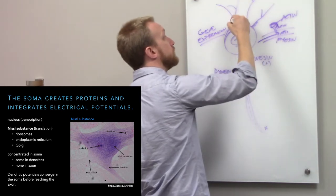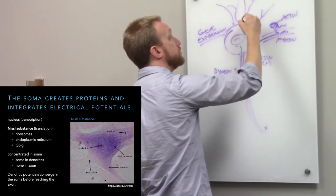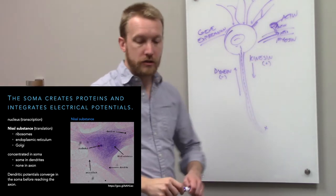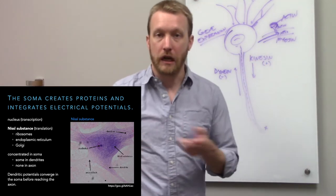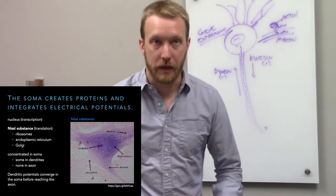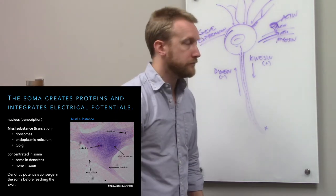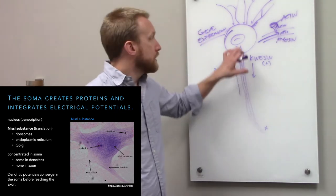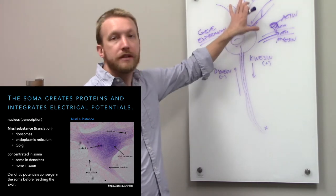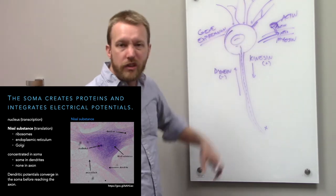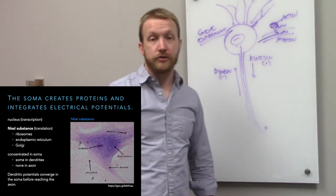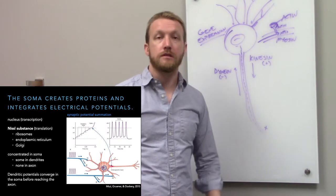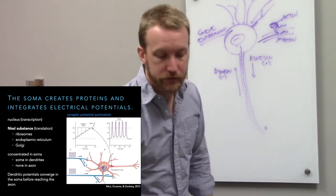The other key aspect of cell body function is to integrate all those synaptic potentials from the dendrites, so we can determine whether to communicate with our partners. We find a lot of Nissl substance in the cell body, a little bit in the dendrites, and none in the axon — that's why we need axonal transport.